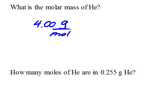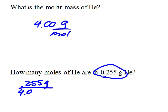Our next question is, how many moles of helium are in 0.255 grams of helium? Each mole is 4 grams, so 0.255 grams is clearly going to be far less than one mole. Our calculation is 0.255 grams divided by 4.00 grams per mole.